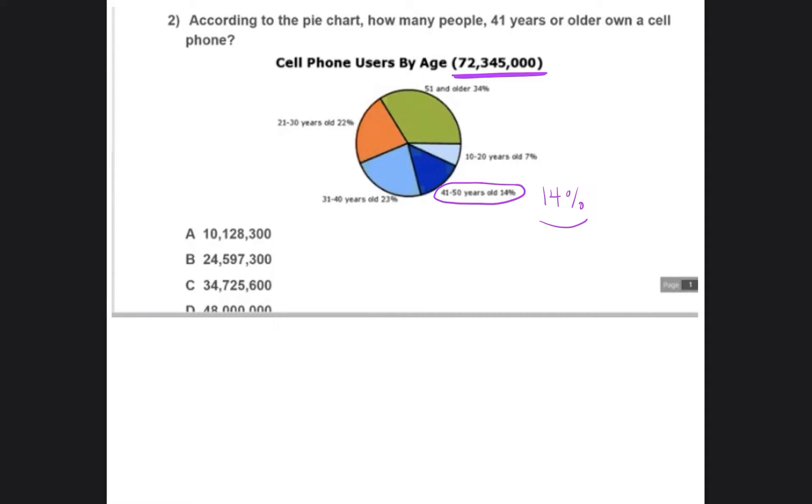But I have a question for you. Do you see any other piece in the pie chart that represents people that are 41 years or older? Okay, so what about this one? I know it doesn't say 41 years old, but is a 51 year old 41 years or older? Yes, they're older. So this group is included too. So 51 year olds are older. So we have to include them. So this is represented by 34%.